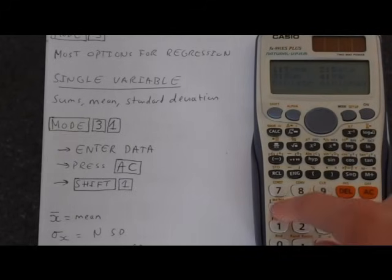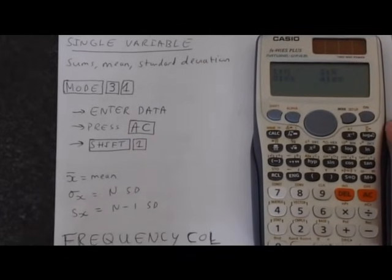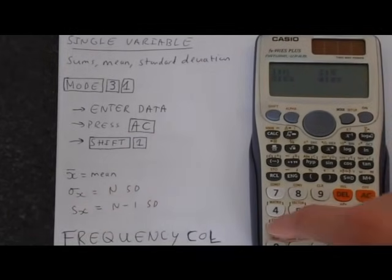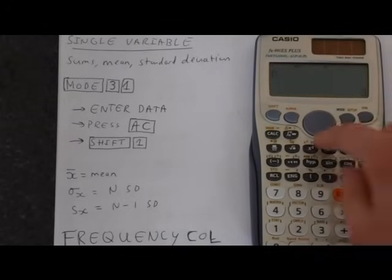If we choose number 4, we can see various options. We've got N, which gives us the number in our sample. We did 1, 2, 3, so N is going to be 3. It's 1, 2, 3, 3 bits of data. Shift 1 gets us back into that mode.